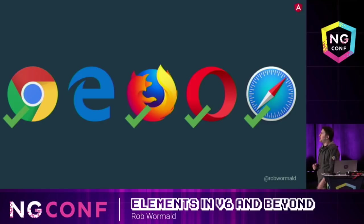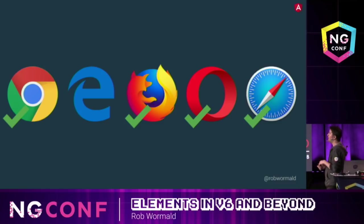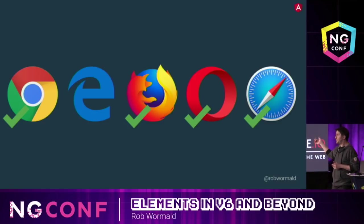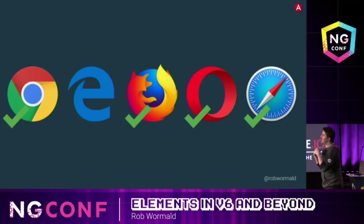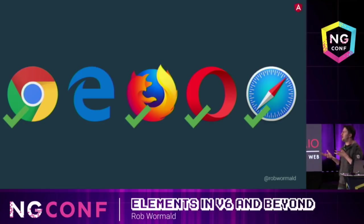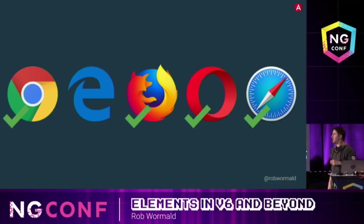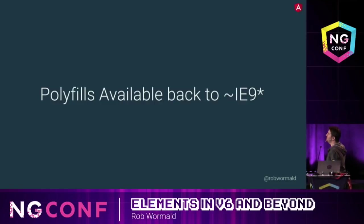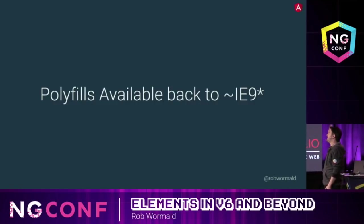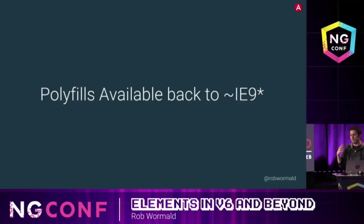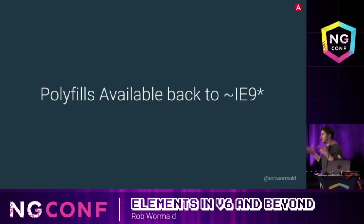A quick note on production readiness. Custom elements are in Chrome stable, coming in Firefox Nightly — expect the next Firefox release to have it. Opera and Safari have shipped it as stable, it's on all iOS devices. Edge has not yet shipped it — there's an issue on their UserVoice site, so go upvote that. We're hopeful that as Angular pushes into custom elements, the Edge team will prioritize it. In the interim, we can polyfill back to IE9 using polyfills from the Chrome team or open source — covering about 95% of functionality for most use cases.